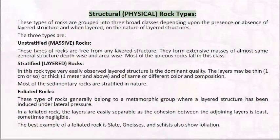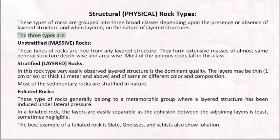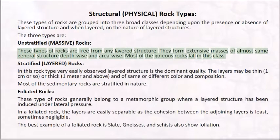Structural/physical rock types are grouped into three broad classes depending upon the presence or absence of layered structure. The three types are: Unstratified Massive Rocks — these types of rocks are free from any layered structure, form extensive masses of almost the same general structure depth-wise and area-wise, and most igneous rocks fall in this class.